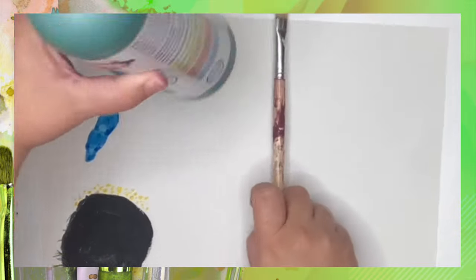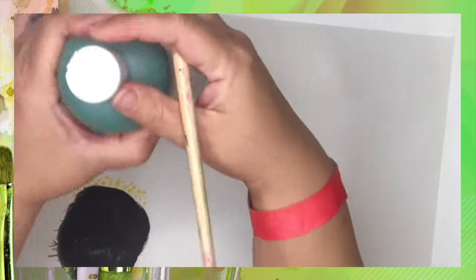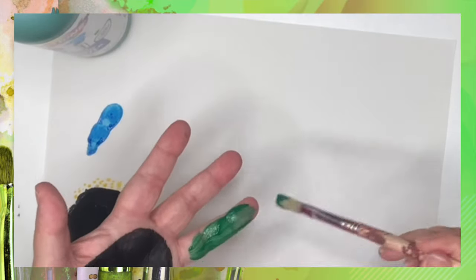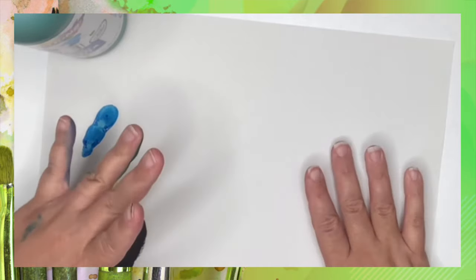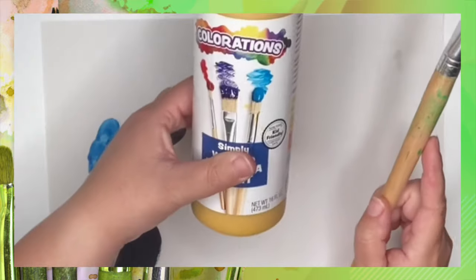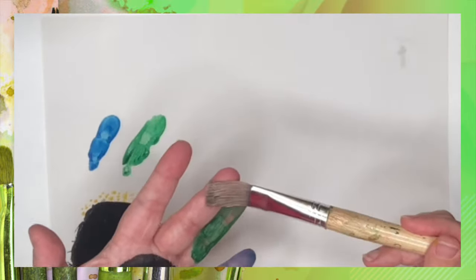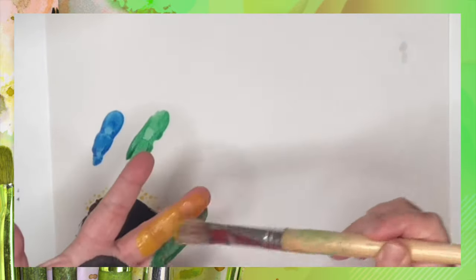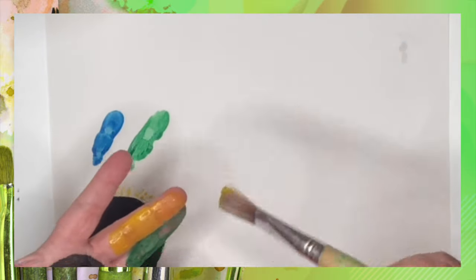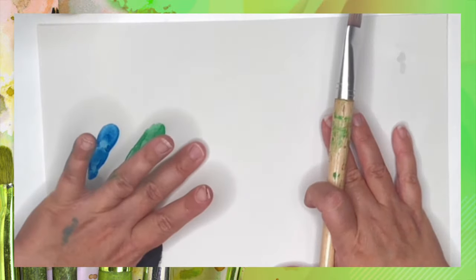Okay and next we're going to grab our green paint so we can paint this finger. So next we grab our yellow paint and the paintbrush we are going to paint this finger. And then smash it down just like the other ones.